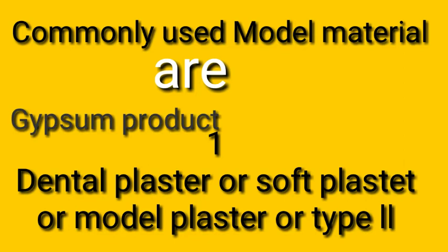Commonly used model materials are gypsum products, which are vastly used in dentistry. Number one: dental plaster, also called soft plaster, model plaster, or Type 2 material. Plaster of Paris is vastly used in dentistry. Its chemical formula is CaSO₄·½H₂O. We use it to pour soft models.